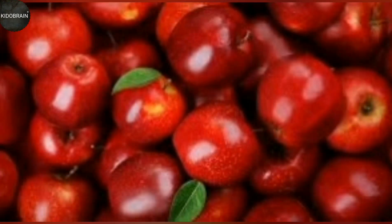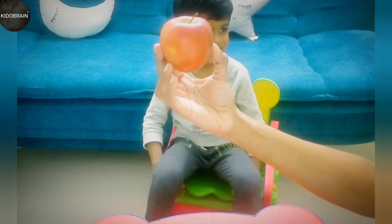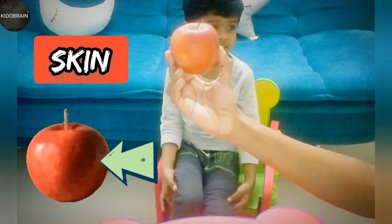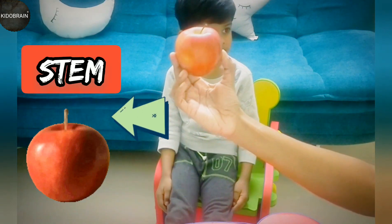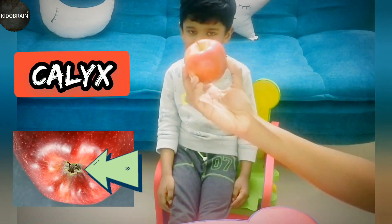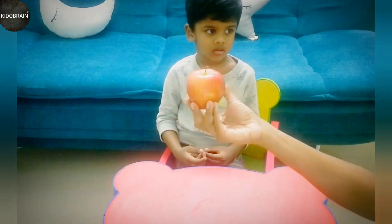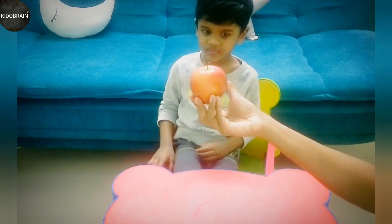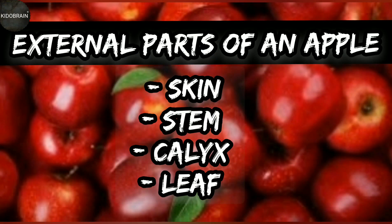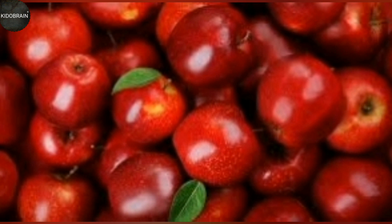First let's see external parts of an apple. What is this? Apple. What do you see in this apple? Skin. Stem. Calyx — where is the calyx? Down. These are the external parts of the apple. We saw external parts of an apple: they are skin, stem, calyx, and some apples do have a leaf stuck to the stem.